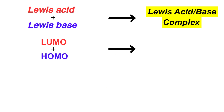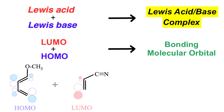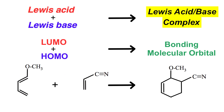A HOMO plus a LUMO gives a bonding molecular orbital. This can be seen in Diels-Alder type cycloaddition, where the HOMO of the diene reacts with the LUMO of the dienophile to give a Diels-Alder adduct, which is a type of Lewis acid-base complex.